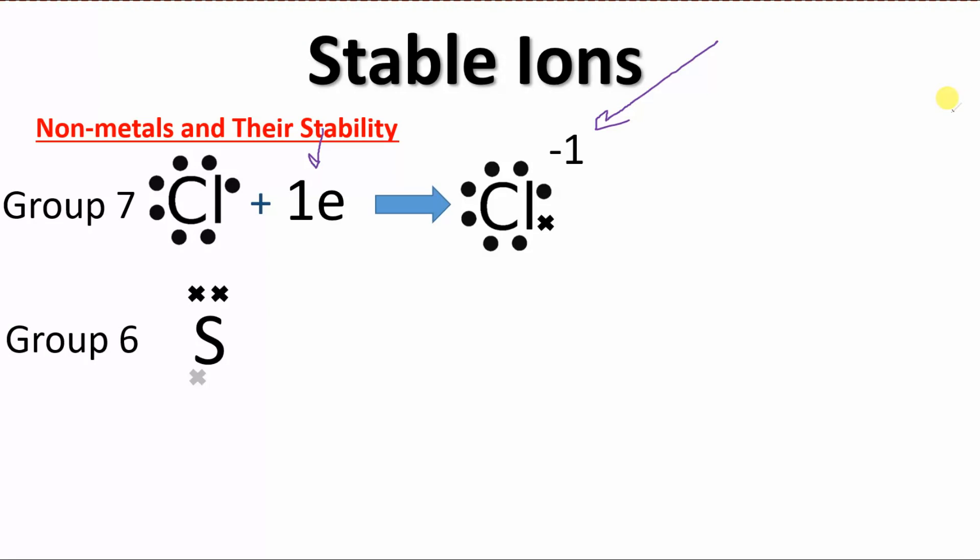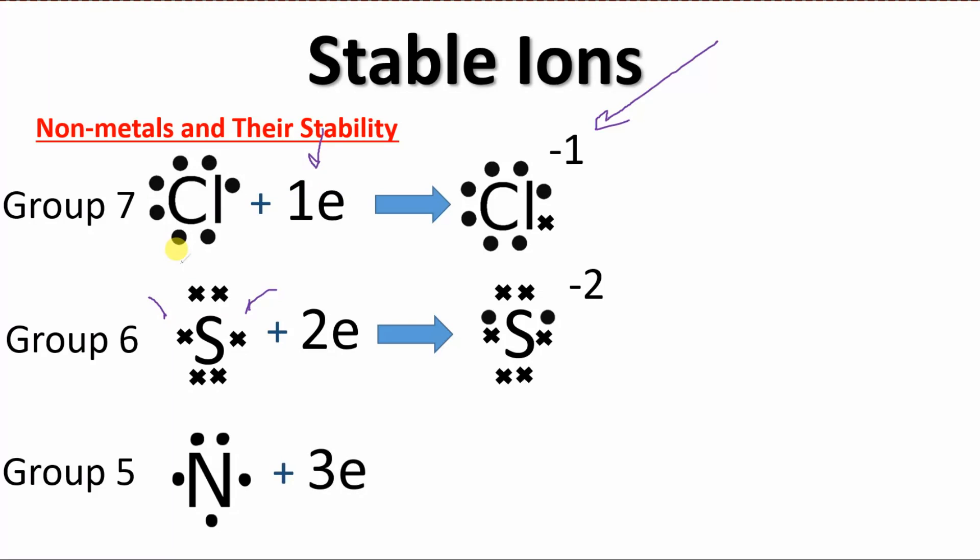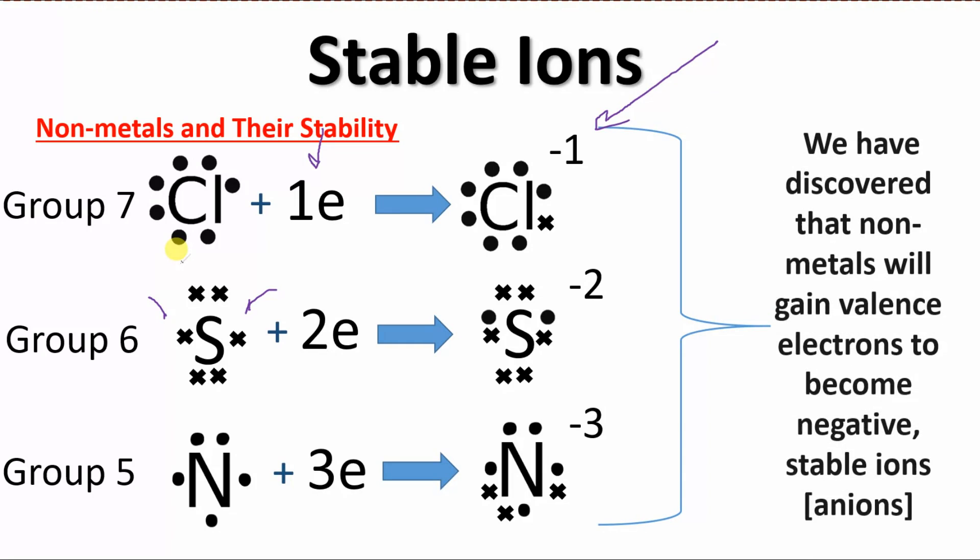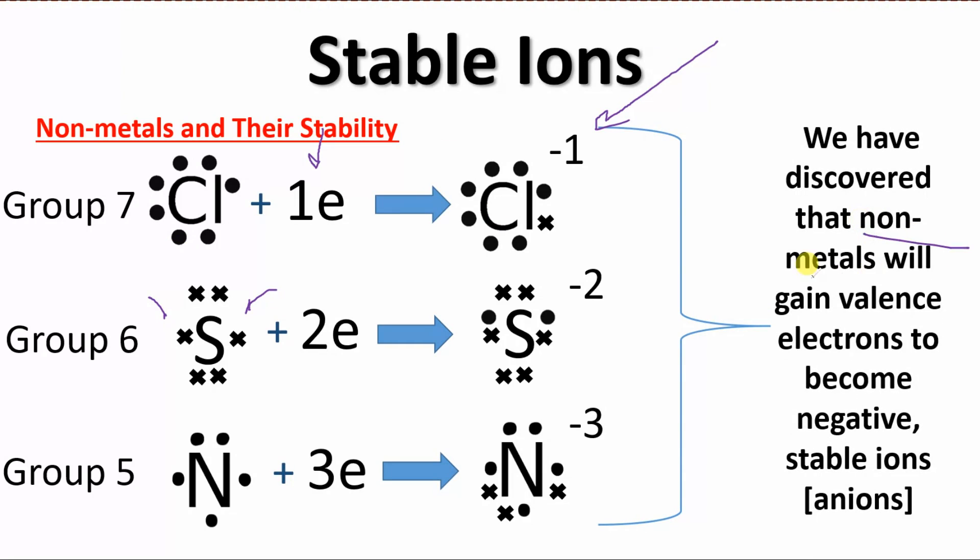Group six like sulfur it has six valence electrons. So we kind of have two spots to put things in right there and there. So we're going to add two electrons. And when we do that we'll have an overall charge of minus two. And when we get to group five we've got our nitrogen. So now we have three spots to put some electrons. So we'll add three electrons in. And there we go. And if we've added in three negatives that means we have an overall charge of minus three. And we have made a discovery again.